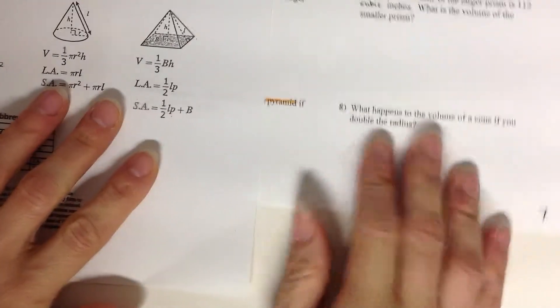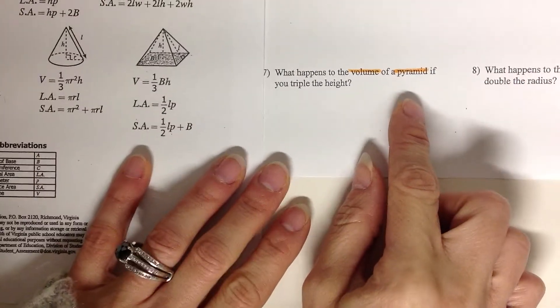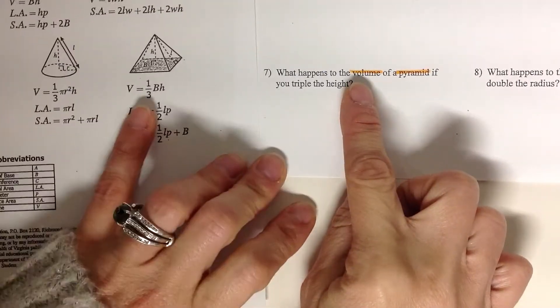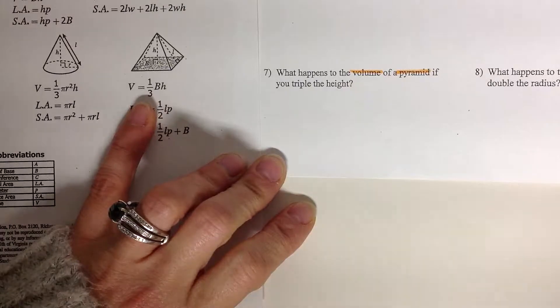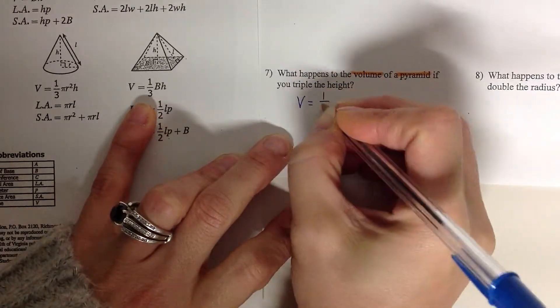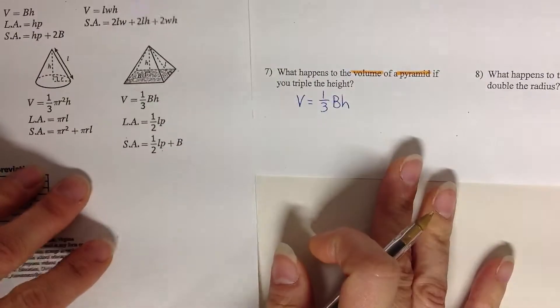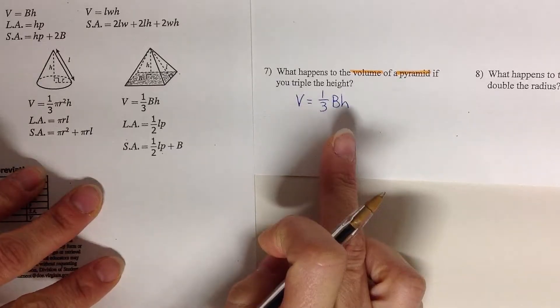So I'm going to find my pyramid. I'm going to find my pyramid and I'm going to look at the volume formula. I'm going to go ahead and write it down actually. So the volume of a pyramid would be found with this equation. Okay, so what this is saying is what's going to happen to the volume if I triple the height?